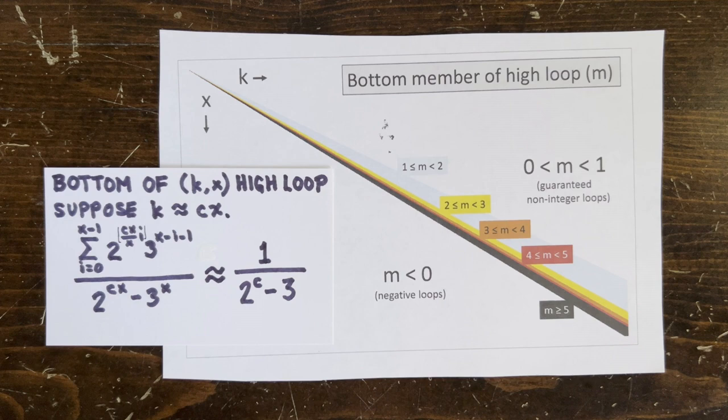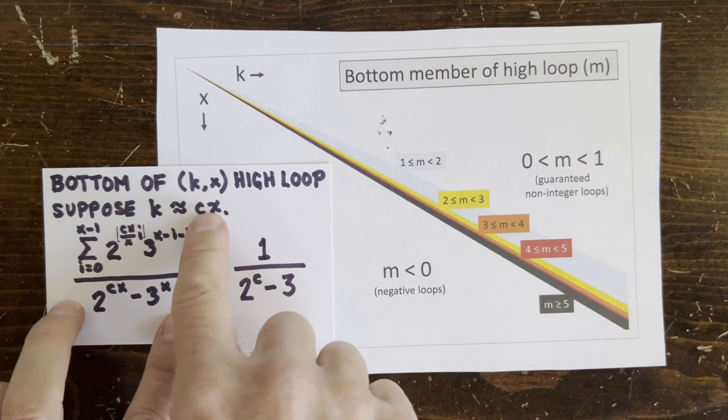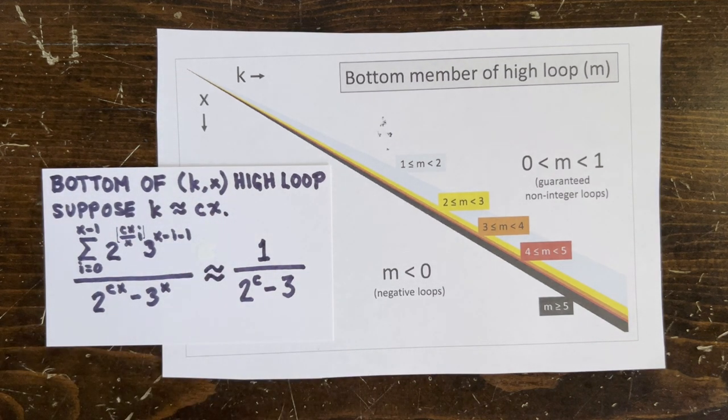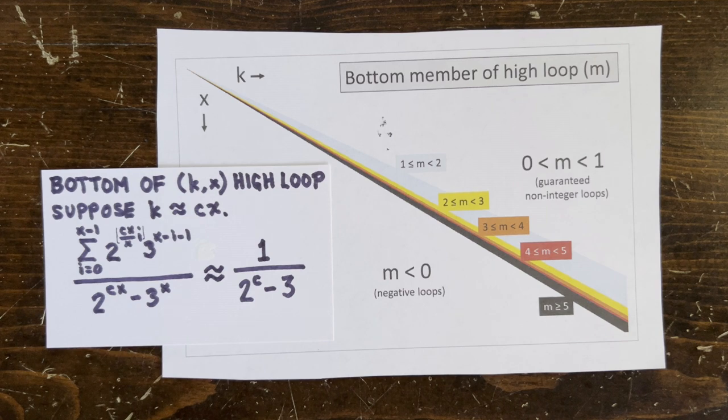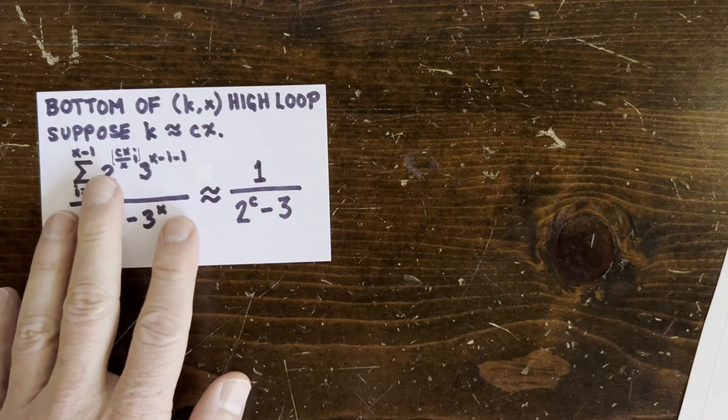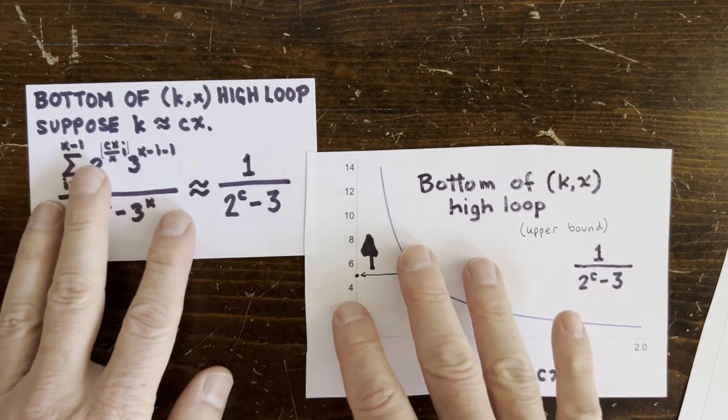So, suppose we pick k around c times x for some c. Here's the formula for the bottom of the kx high loop, which amazingly simplifies to 1 over 2 to the c minus 3. You know, and this is an approximation. And here's the plot of that function.